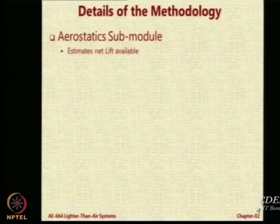Let us look at the details. There are various sub-modules in this particular methodology. Once we get an overview of the modules, we will understand what it can do and what it cannot do. The first sub-module is very specific to LTO systems, which is why we have spent so many lectures deriving those mathematical expressions — we need to link the net lift available versus aerostatic parameters such as humidity, temperature, pressure, and superpressure. We need to establish a link between all those 9 or 11 parameters and the net lift, because our net lift comes mainly from aerostatics.